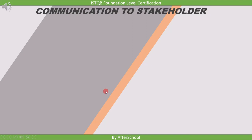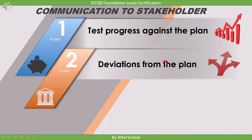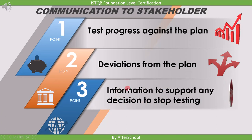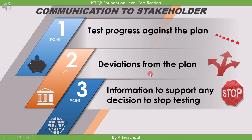One of the important points why we do test monitoring and control is to communicate information to the stakeholders. The information we share includes: test progress against the plan, any deviations from the plan, and information to support any decision to stop testing. These are the different types of information we communicate to stakeholders, gathered during the test monitoring phase.